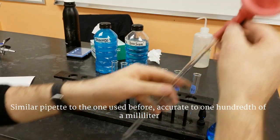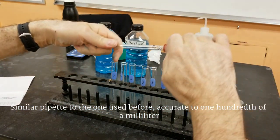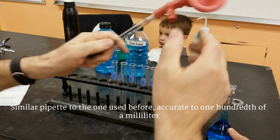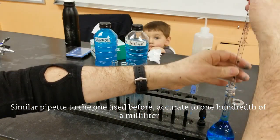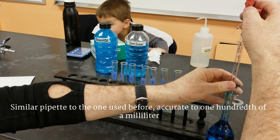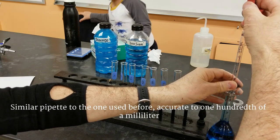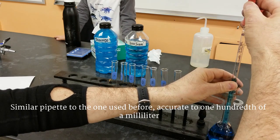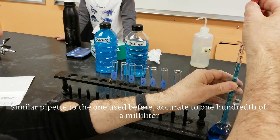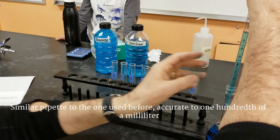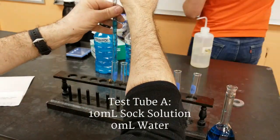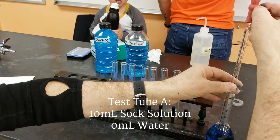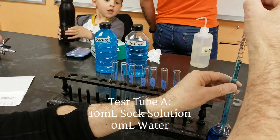Next step is that we're taking various amounts of this stock solution and we're going to put it into test tubes A through H. A is going to be just this stock solution. H is going to be just water. And the rest are going to have various amounts, which are in your lab handout and will also be written on the board. This will be written on the board.